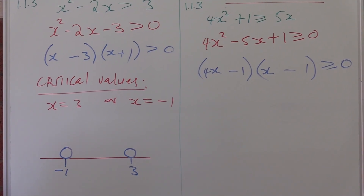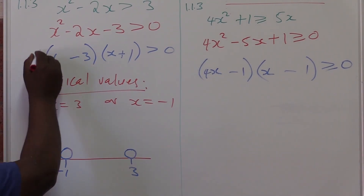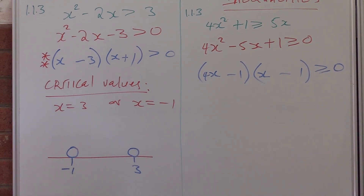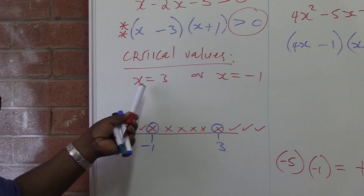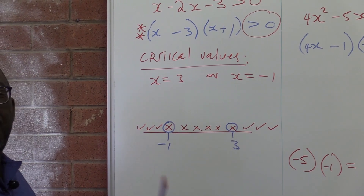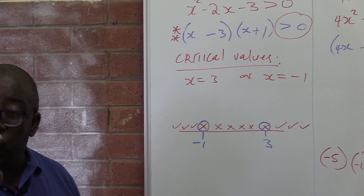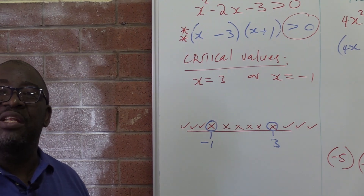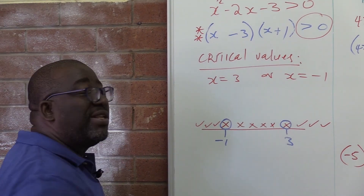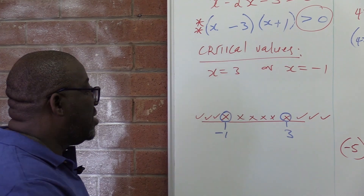Remember what is happening here. This step here becomes key — this is what is going to give us solutions. Are the critical values part of our solution? No, they are not. How many solutions do you see? Two — then you present two solutions. If it was only one region, we present one solution.